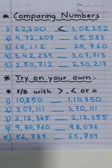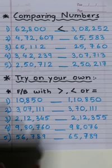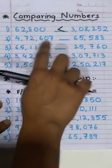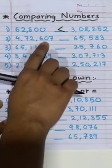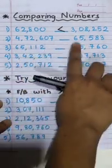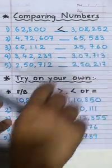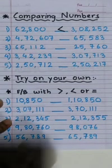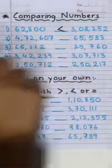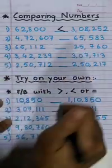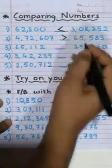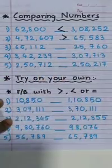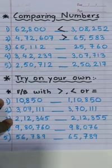So here we will put this sign. Easy? Let's have a look at the next one. Here it is a 6 digit number, right? And this one is 5 digit. So which is smaller? 65,583 is smaller. So easy.